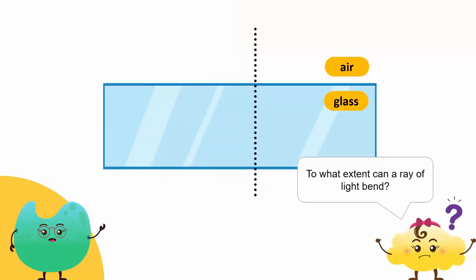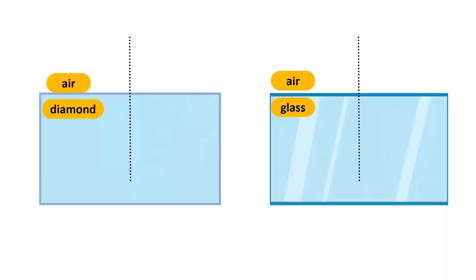The extent to which a ray of light bends depends on the density of the material. If a material is dense, a ray of light entering it from a rare medium bends more towards the normal. For example, light entering a diamond from the air bends more than light entering glass.